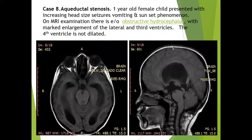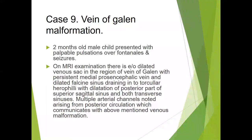Case eight was of aqueductal stenosis. A one-year-old female child presented with increasing head size, seizure, vomiting, and sunset phenomenon. On MR examination, there is obstructive hydrocephalus with marked enlargement of the lateral ventricles and third ventricle; however, the fourth ventricle is not dilated.